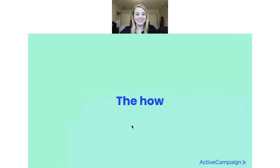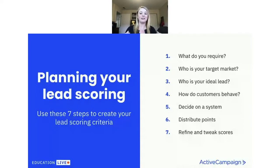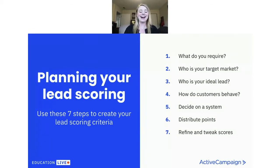How do we do lead scoring? Before you start simply giving points to things, you need to plan out what your lead scoring will look like. Here are seven steps to get you started. First, think about whether you have any criteria that are required for your product — for example, someone needs to be in your service area, or you're selling beer and they have to be 21. If there are minimum criteria, you need to match that threshold first.